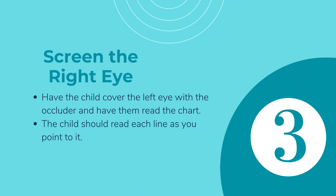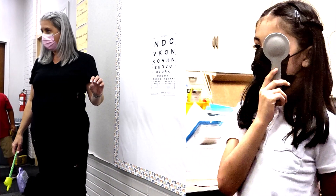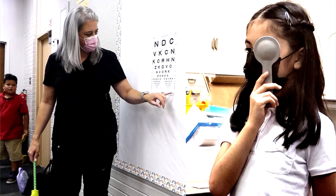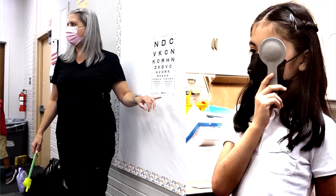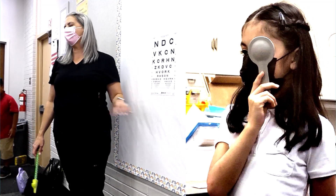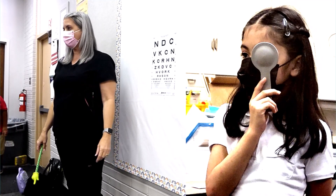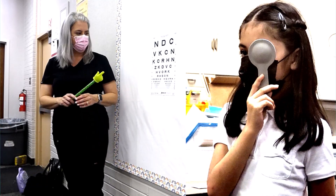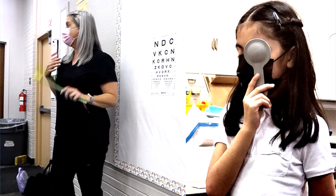Third, screen the right eye by having the child cover their left eye with an occluder. Using a pointer or your finger, direct them to the right side of the line they will read. The child may need assistance with proper use of the occluder — ensure the eye is completely covered and that the child is not attempting to lean forward or peek around the occluder. If a child is having issues holding the occluder consistently, consider switching to stick-on or flip-up glasses options.